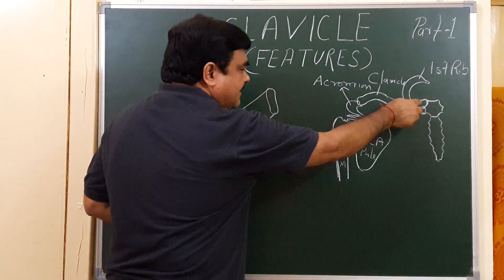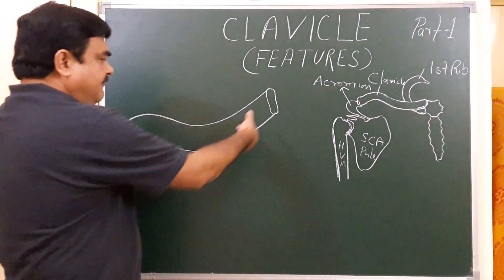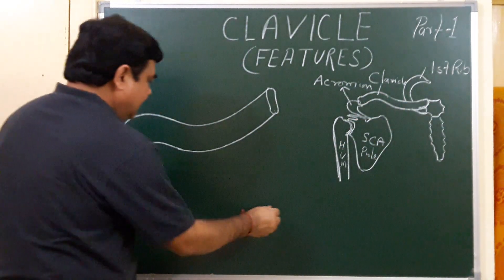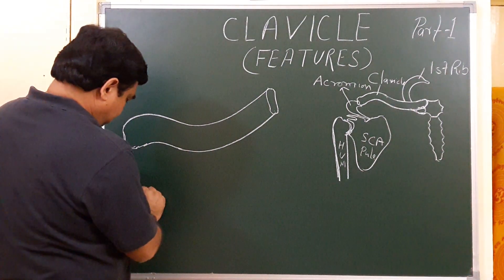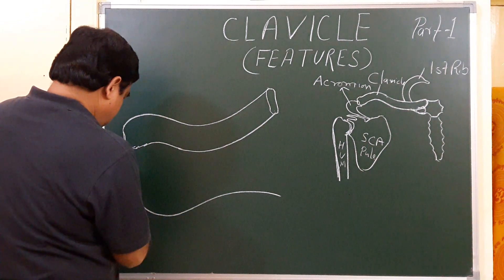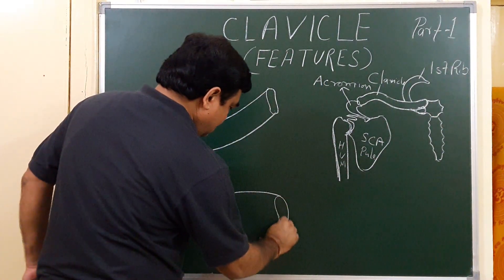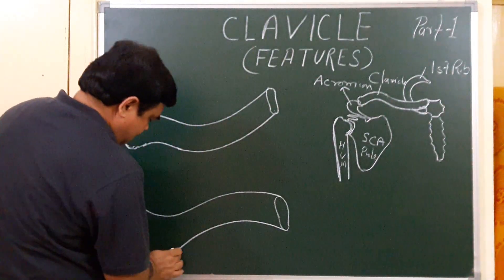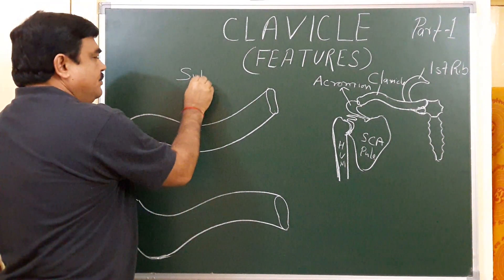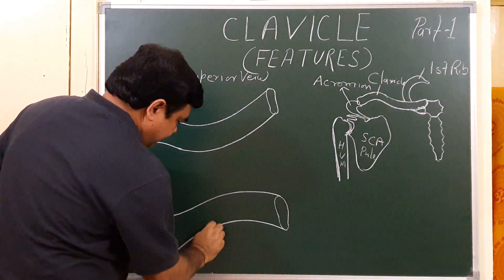This surface is the superior surface — that is what you see when viewing the clavicle from above. If you rotate the clavicle and view from below, then this will be the inferior surface. So this is the superior view and this is the inferior view.